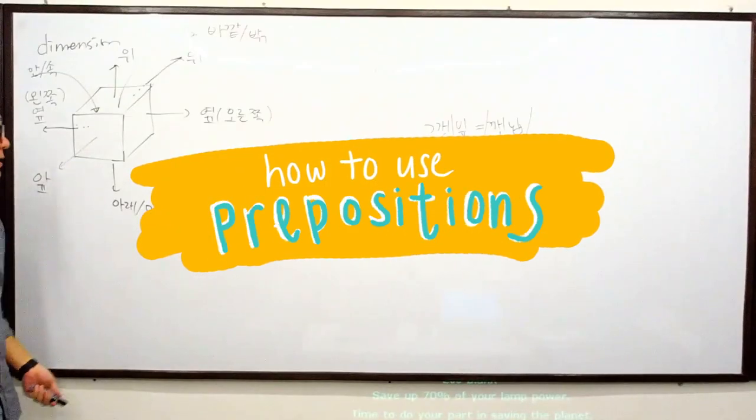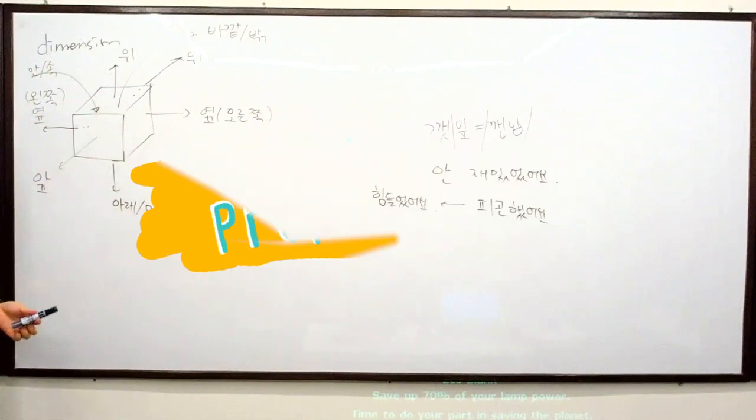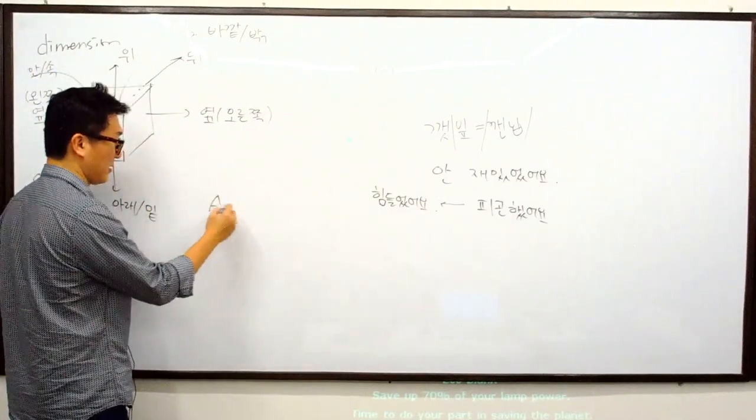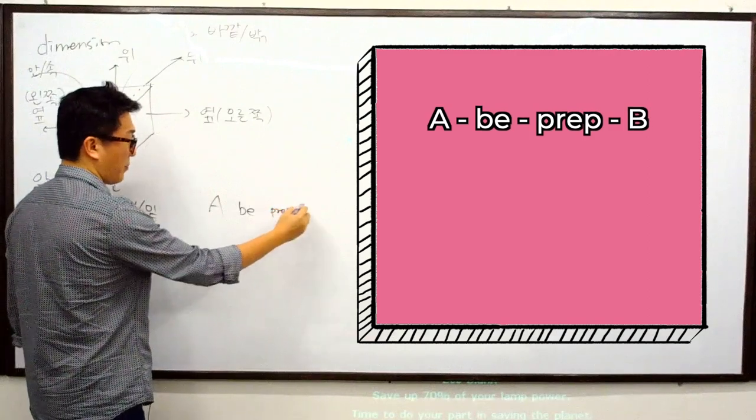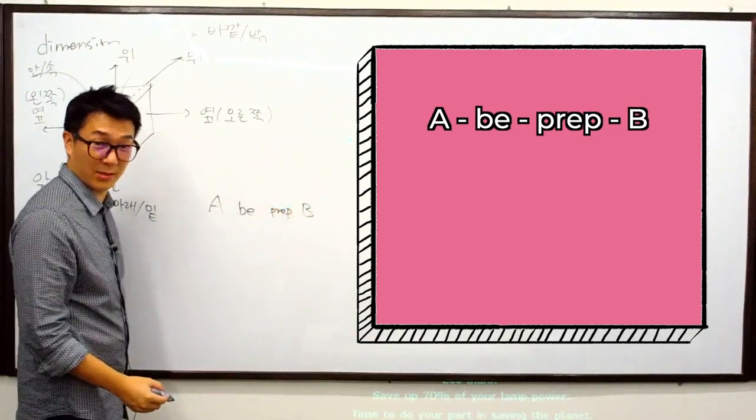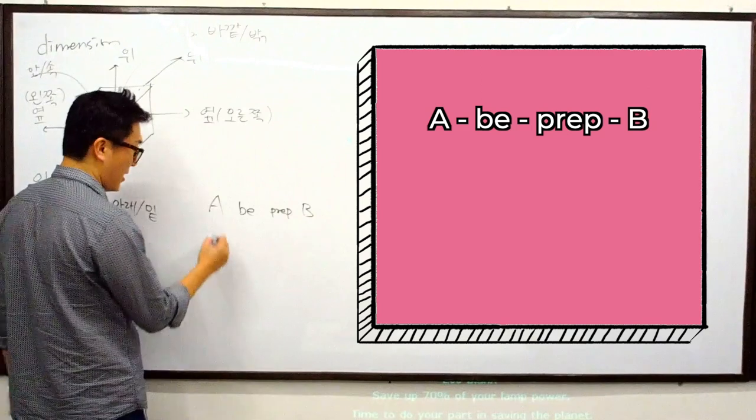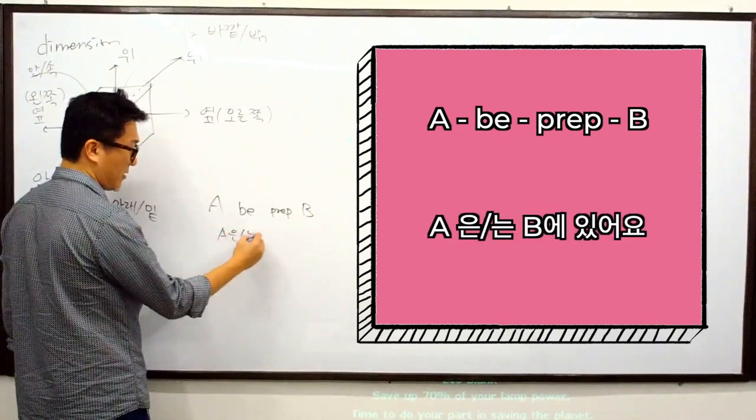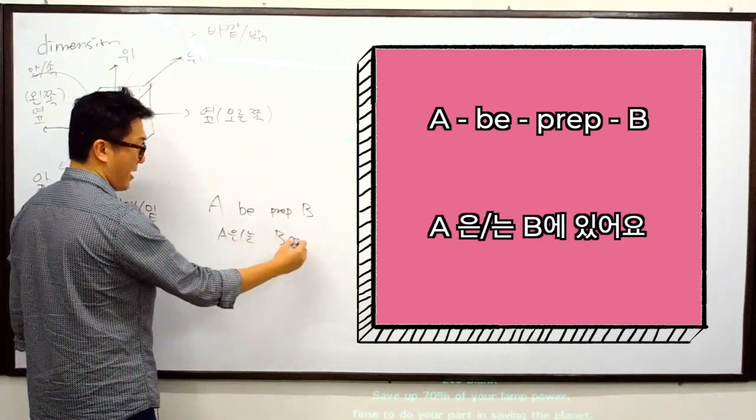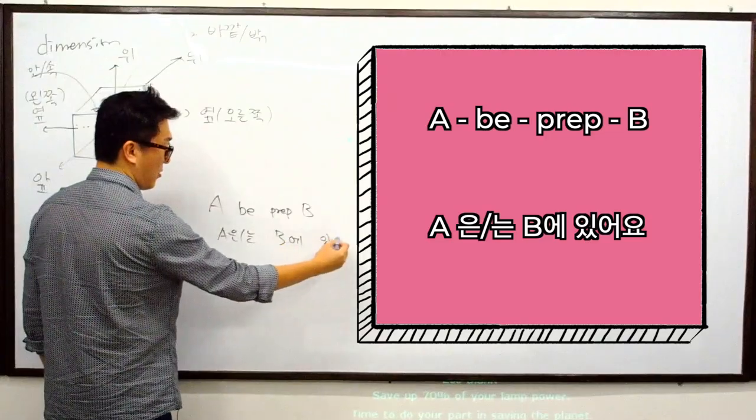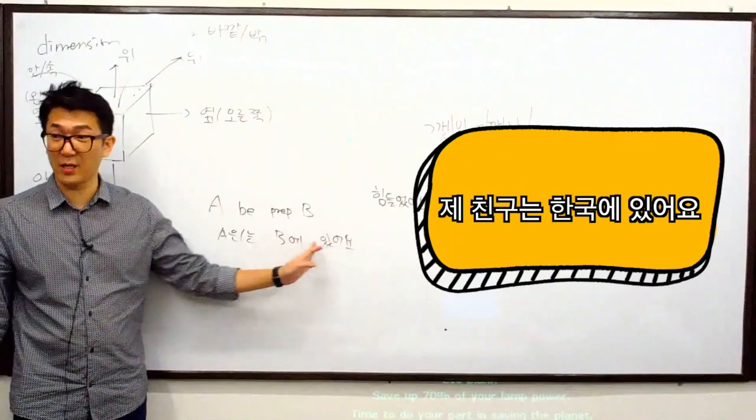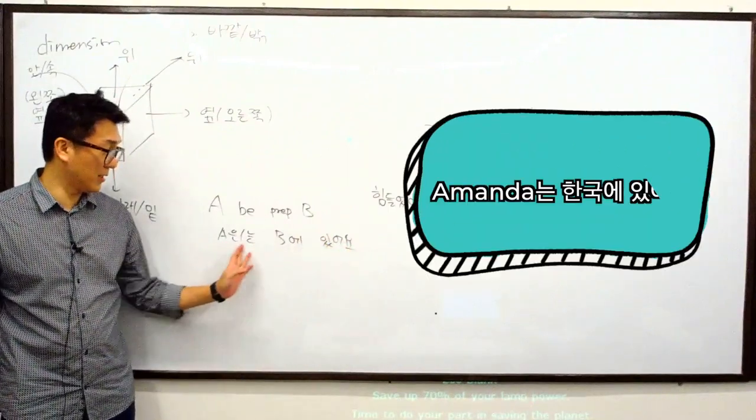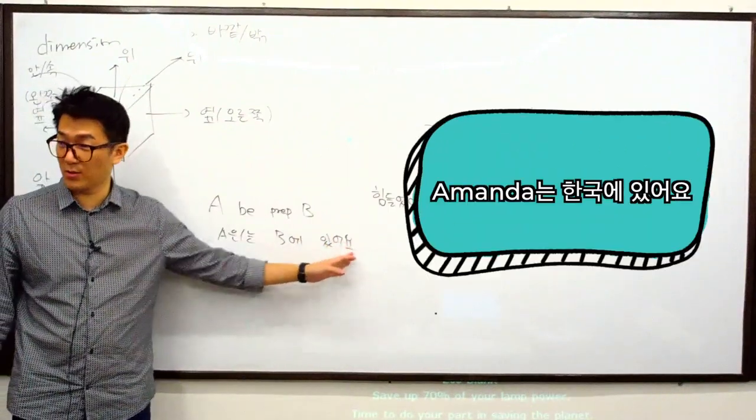How do you use it with the dimension we have learned? These things A, B, prepositions, B, right? This is a template we learned, right? How does the A은는 B에 있어요, right? 제 친구는 한국에 있어요. Amanda는 한국에 있어요.